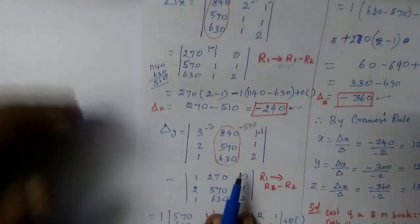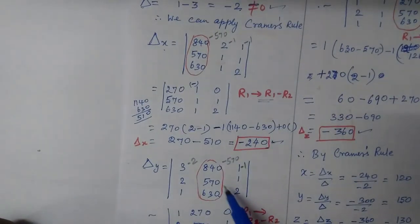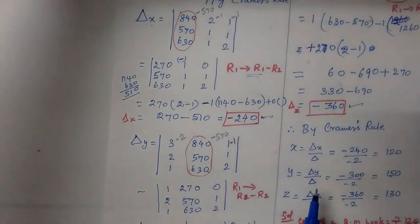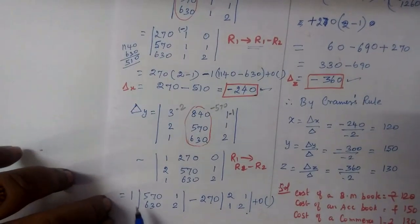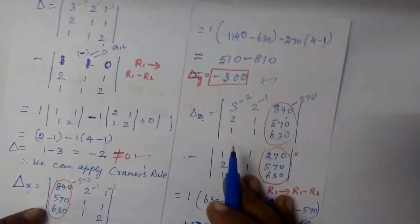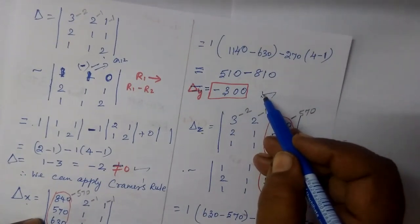Next you want to find del y. Del y is equal to the second column replaced with constants using the usual procedure. The final answer for this is minus 300.